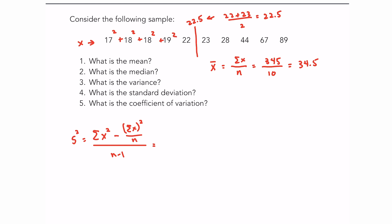And if you do that you should get 17,441 minus the sum, which we had from before, 345 - we'll square that, divide that by 10, and then divide the entire thing by 9 (10 minus 1). And this should give you 615.38 repeating, and this is the sample variance.